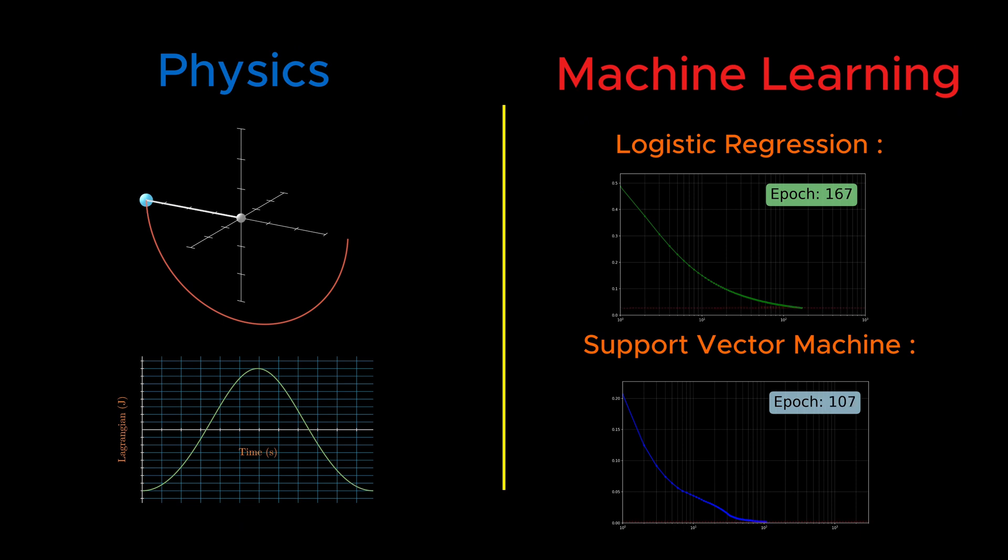So far, we've seen that both in physics and machine learning, the system seeks to minimize something, the action in physics, the loss function in machine learning. But now comes the key question. What's the difference between how nature optimizes its system in physics and how we humans try to optimize our machine learning models?